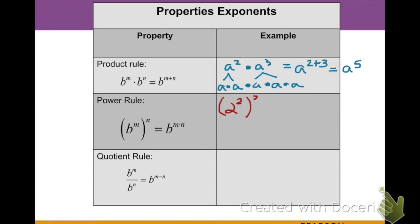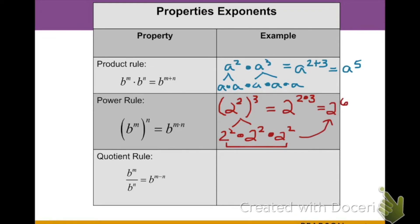Our next property is the power rule: if we have a base already raised to a power, and then raise that to another power, we multiply those exponents together. For example, 2 squared all cubed is the same as 2 squared times 2 squared times 2 squared. Using the product rule, 2+2+2 equals 6 — the same result as multiplying 2 times 3 — giving us 2 to the sixth power.